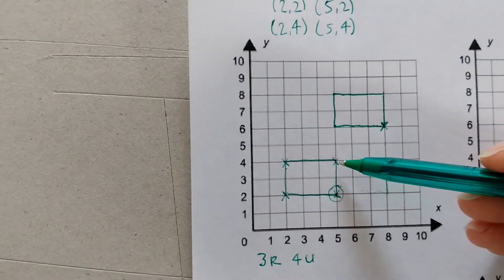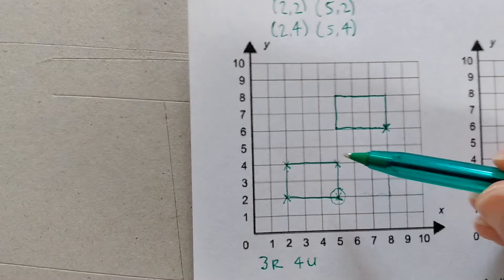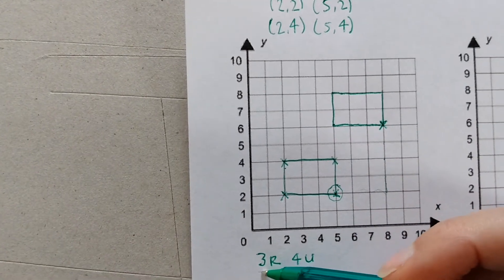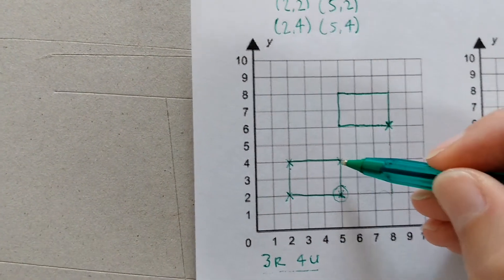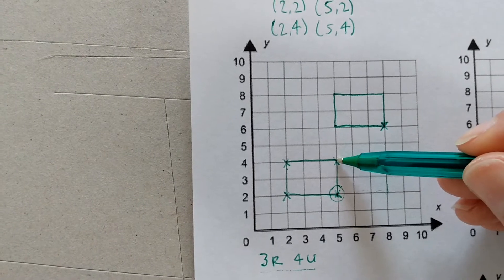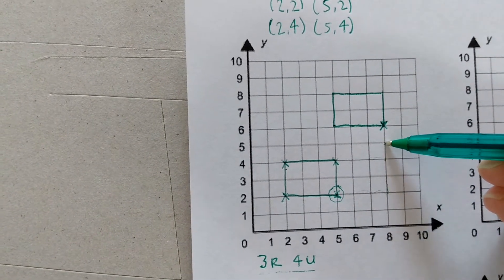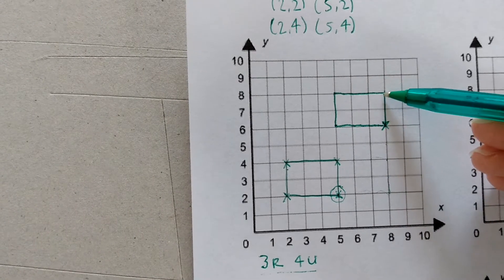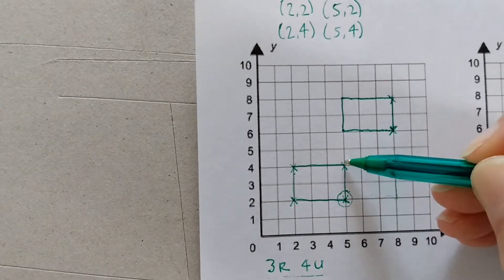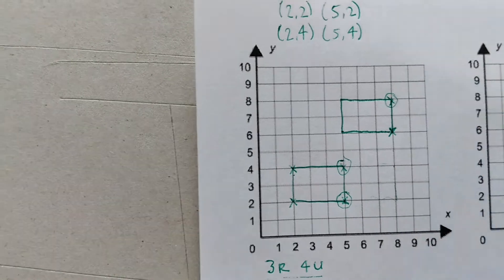I could choose any of my coordinate points and they should follow this instruction, 3 right and 4 up. Let's test this one. 3 right and 4 up. 1, 2, 3. 1, 2, 3, 4. He's ended up there. He started there and he's ended up there.